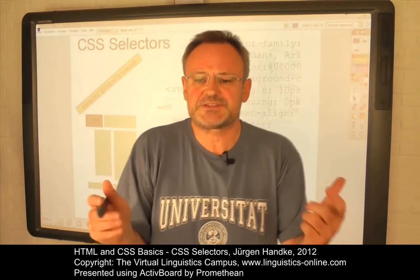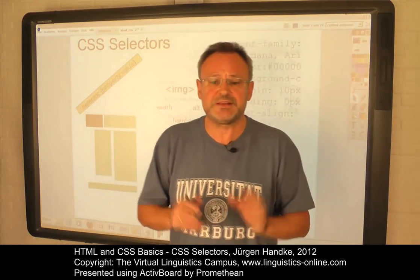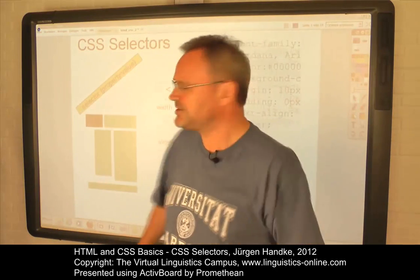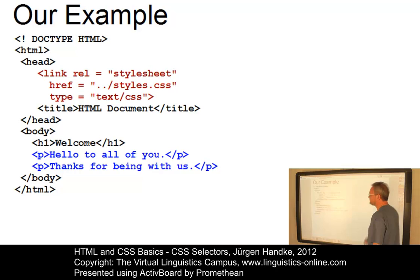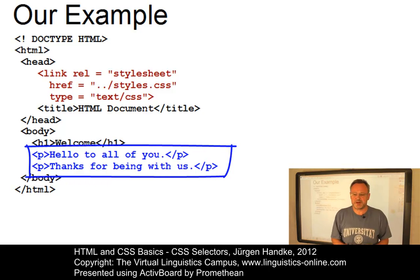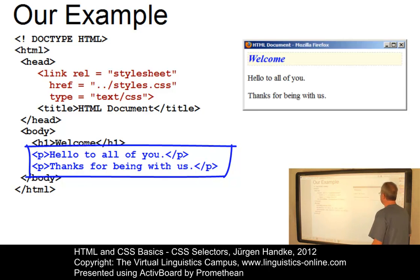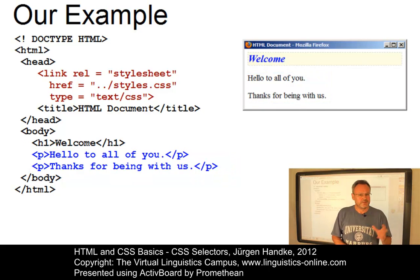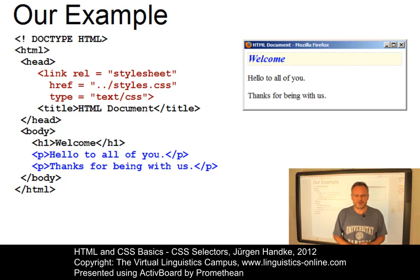To show the effects that can be created with different selectors, we will use the HTML document of our previous HTML e-lectures with an external stylesheet and a tiny change. Our document now contains two paragraph tags in its body, resulting in two paragraphs in the browser. This allows us to show the effects of style changes more appropriately.